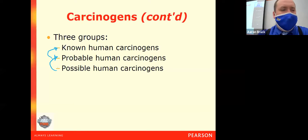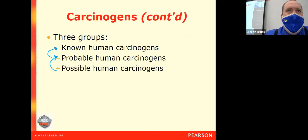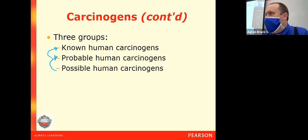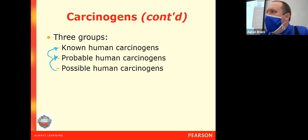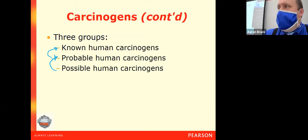As you might guess, the list of possible carcinogens is the largest, because we don't need a lot of linkage to place something there. We just say there might be something here that needs further investigation, put warning labels on things identifying a possible link to cancer, and let the evidence accumulate over time.